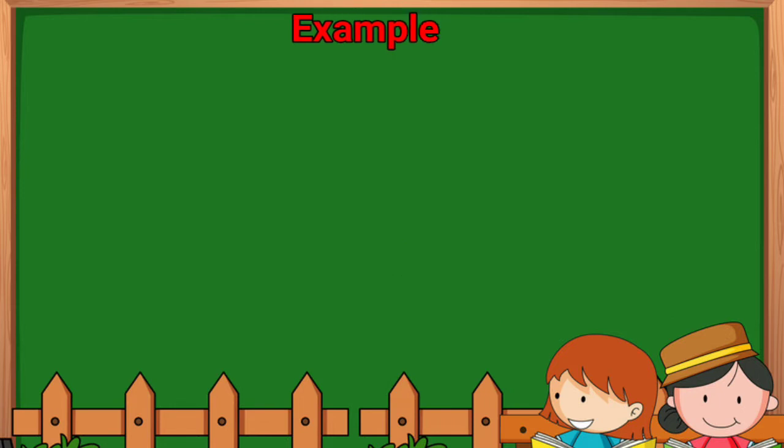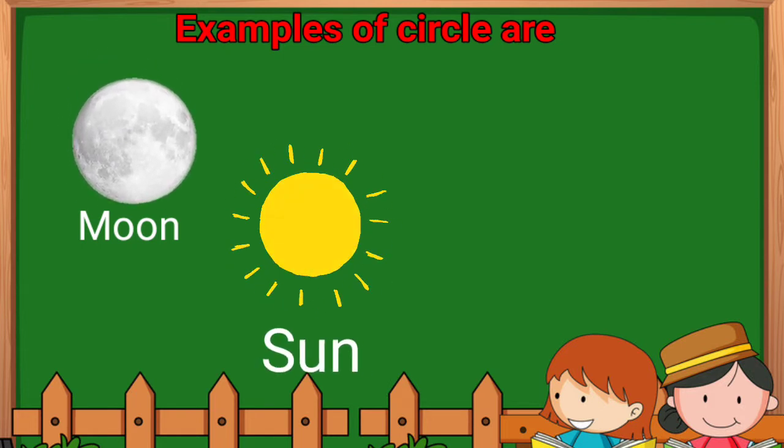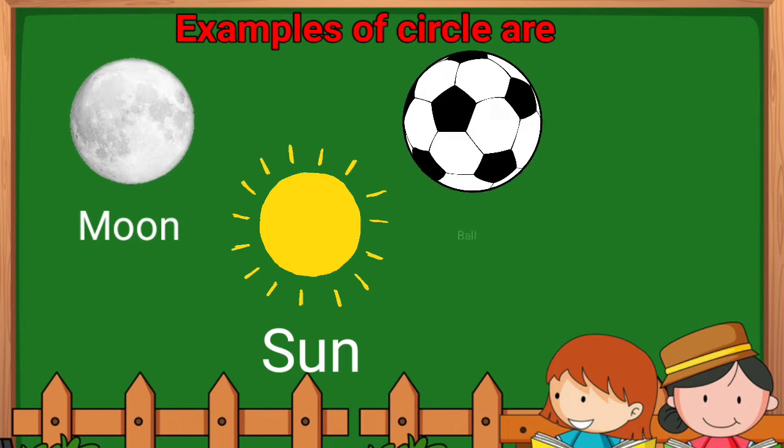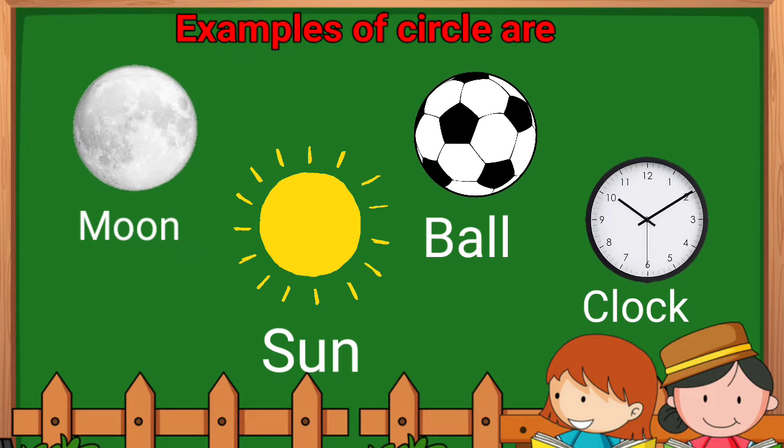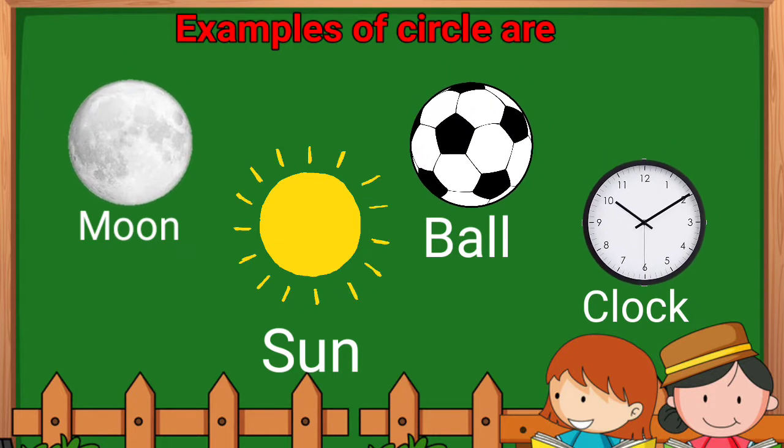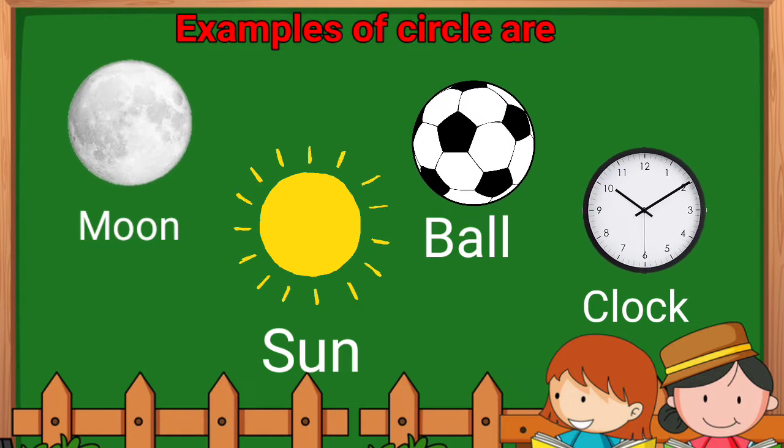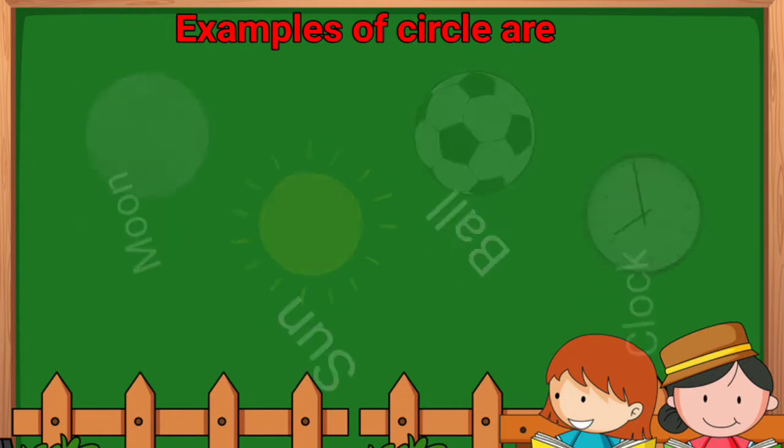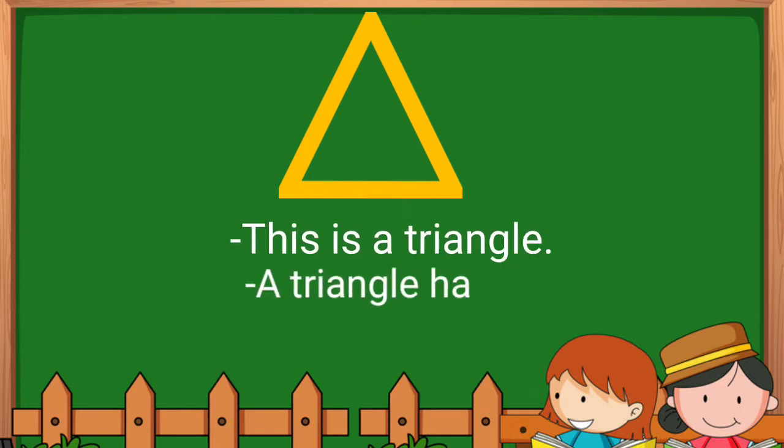Examples of circle are moon, sun, wall clock. These are all examples of circle. Triangle. This is a triangle.